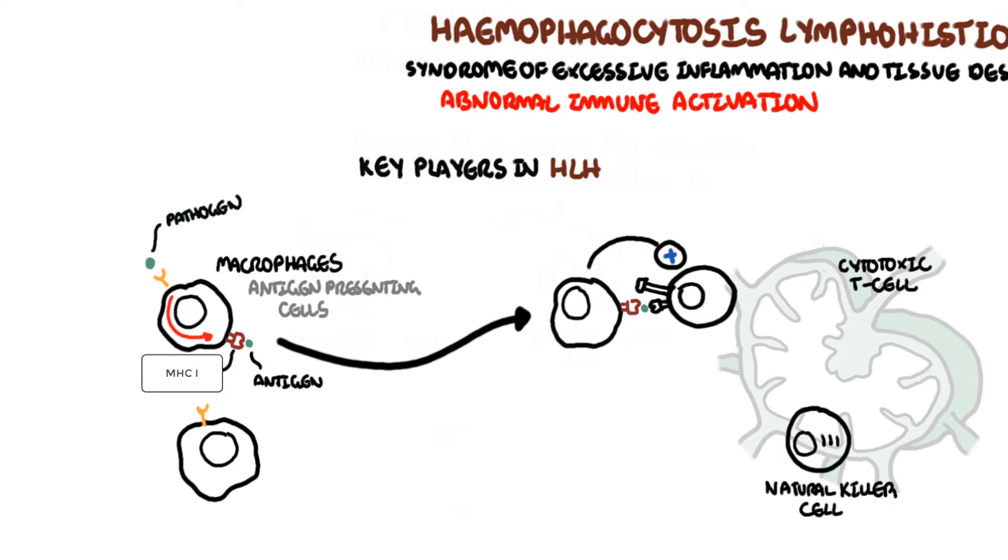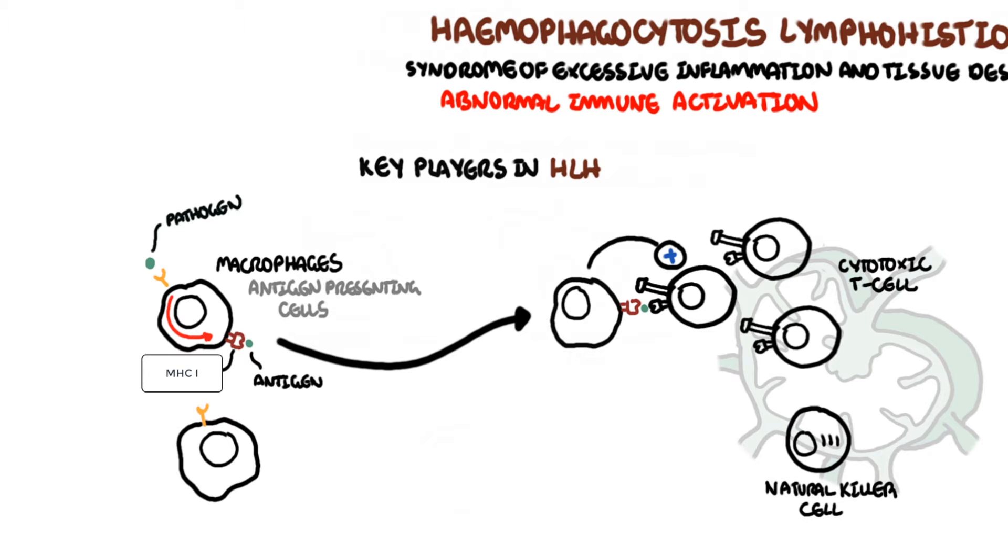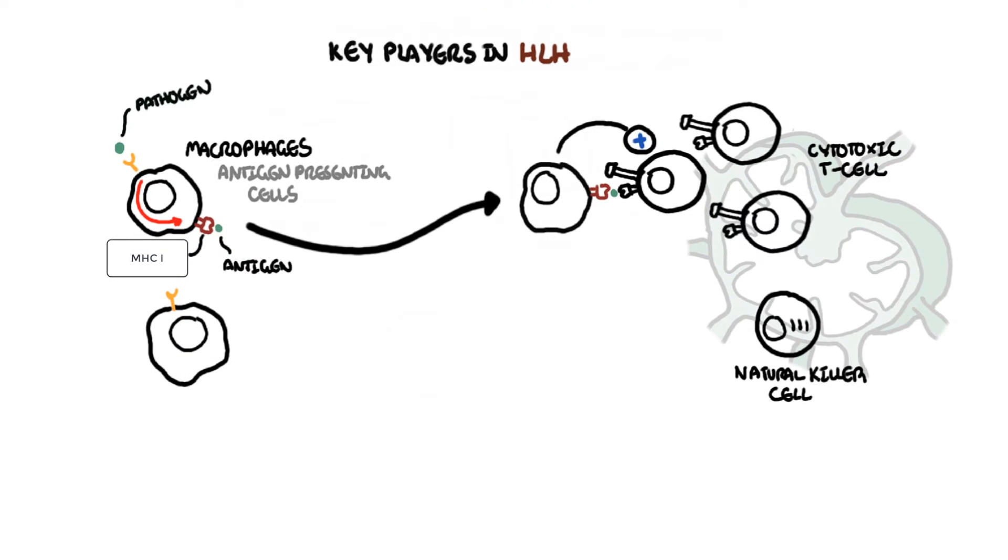Cytotoxic T lymphocytes become activated and proliferate. The purpose of the cytotoxic T lymphocytes and natural killer cells are to recognize these foreign antigens and essentially eliminate it.